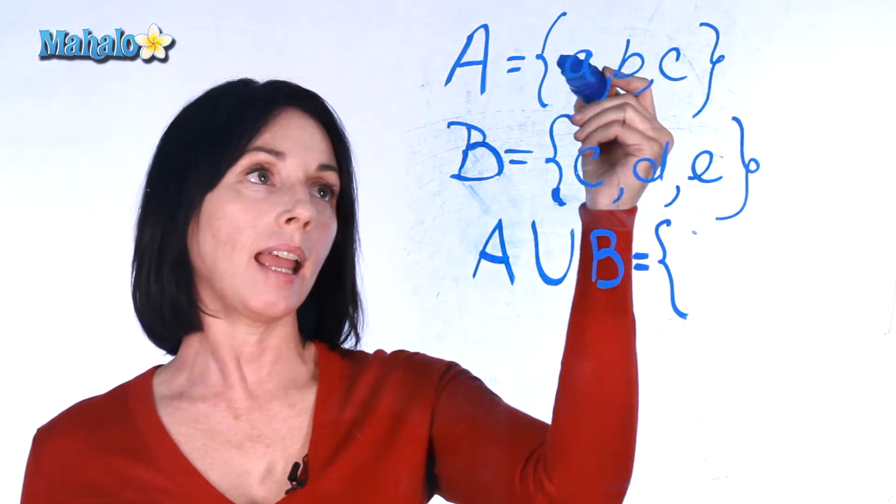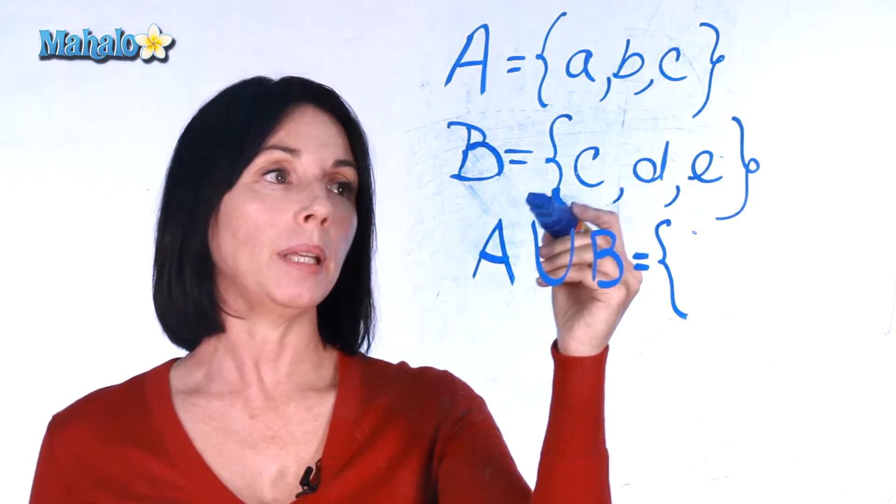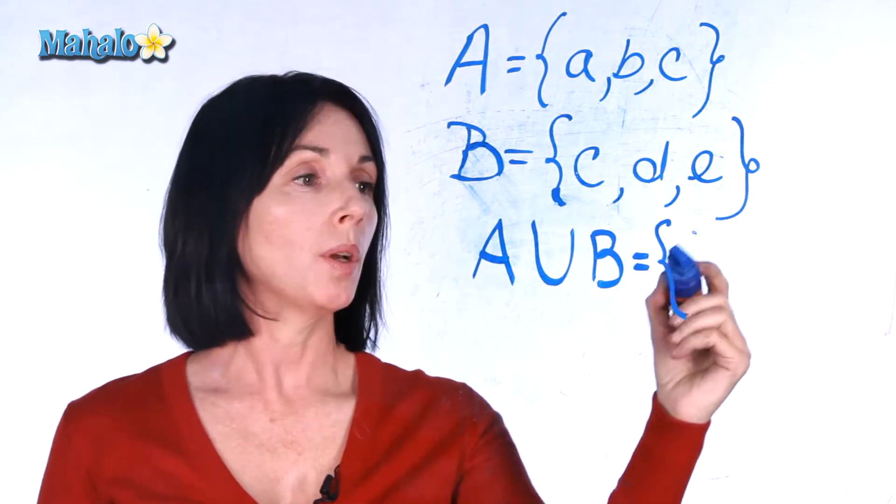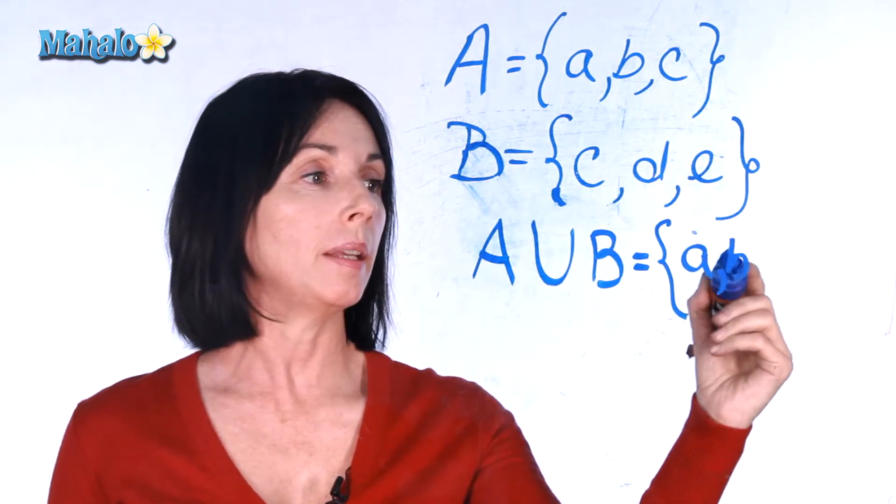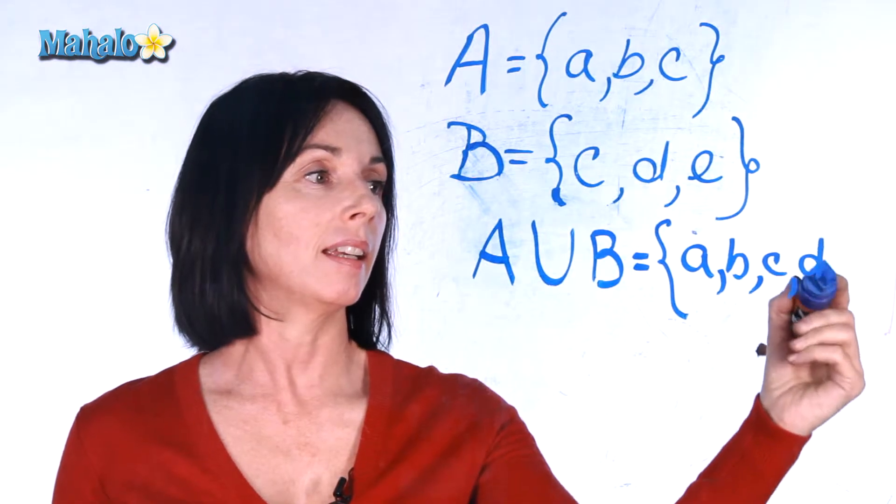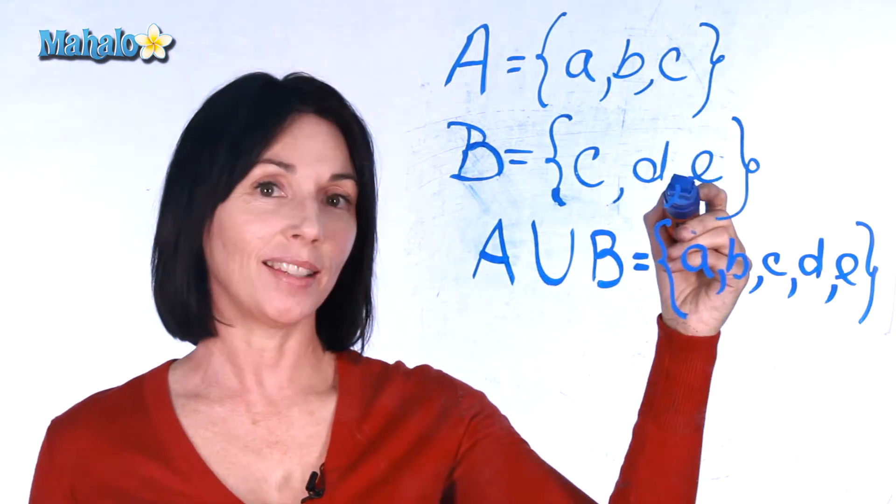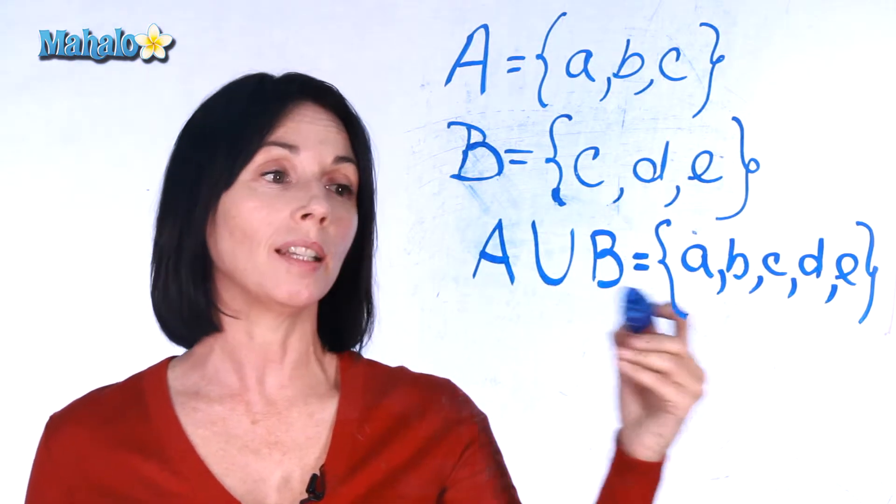Set A has a, b, and c. Set B has c, d, and e. So the union of those two, when we combine them, will have a, b, c, d, and e. Everything that's in A and everything that's in B is in the union of A and B.